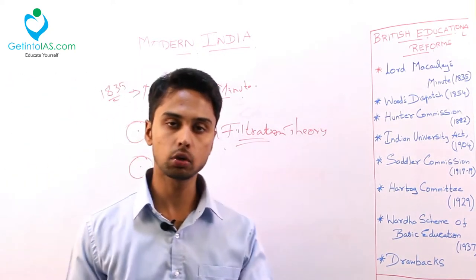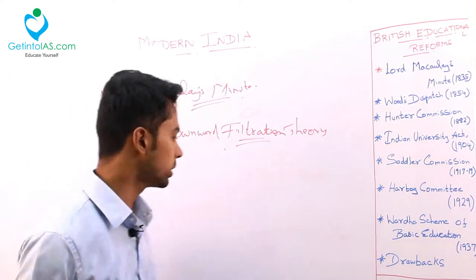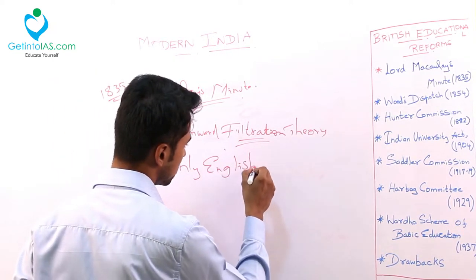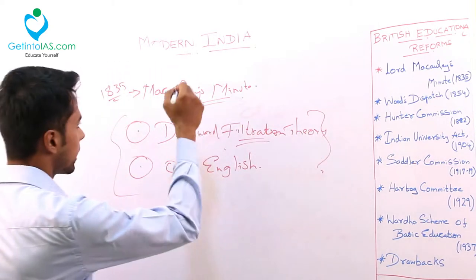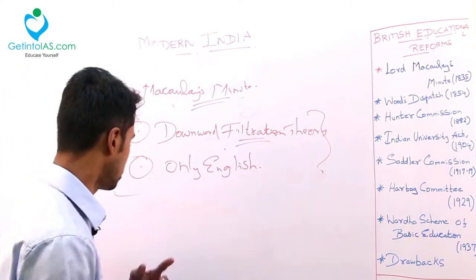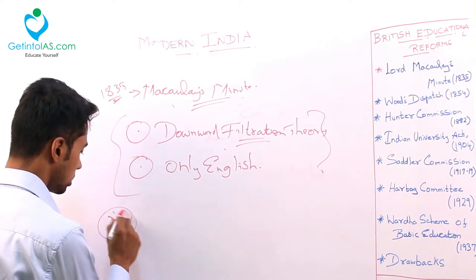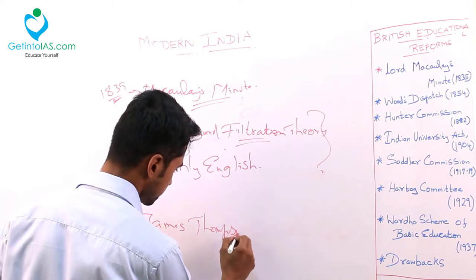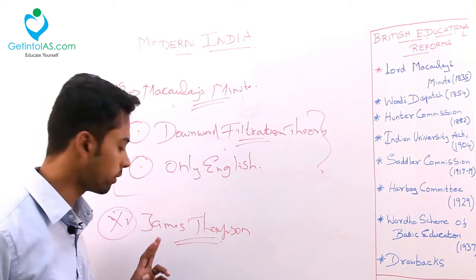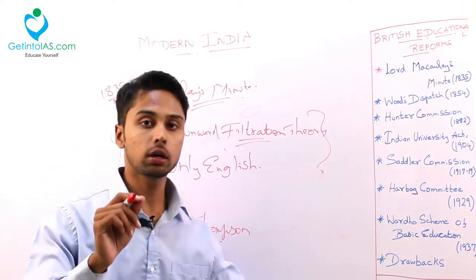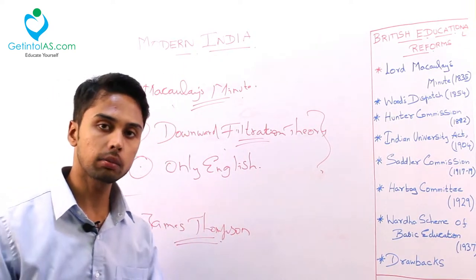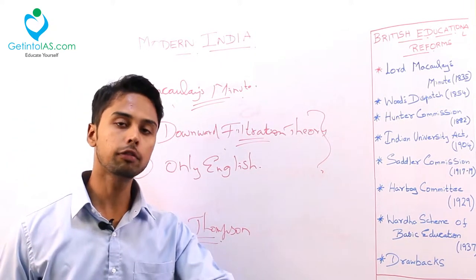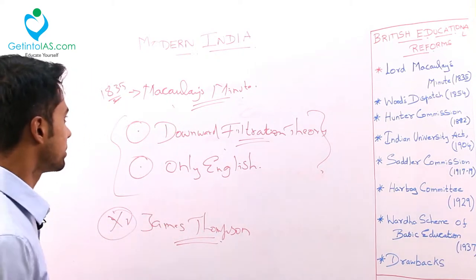On the second thought - the confusion whether to go with vernacular or English - he told that we should go for education only in English. So these two thoughts were resolved by the Macaulay Minute in 1835. Also, one point to note: James Thompson is the only first person to introduce schooling in vernacular languages, starting some schools in Calcutta in favour of promoting vernacular languages.